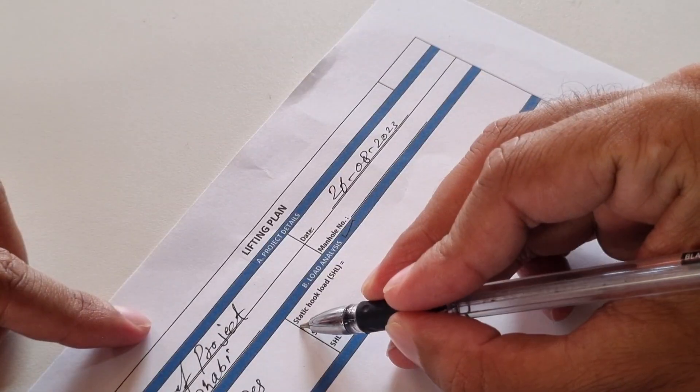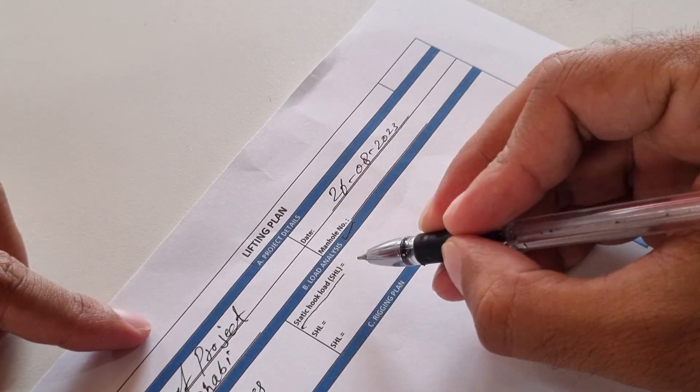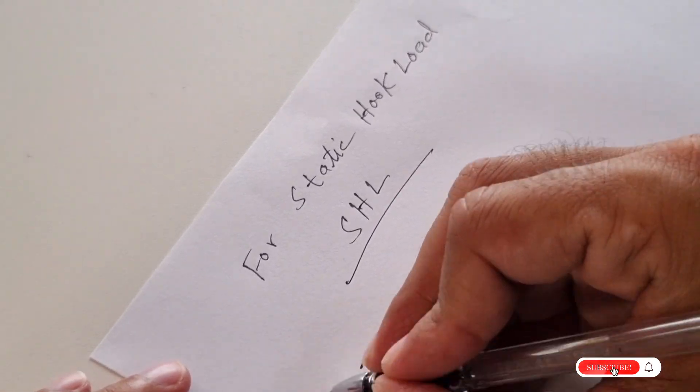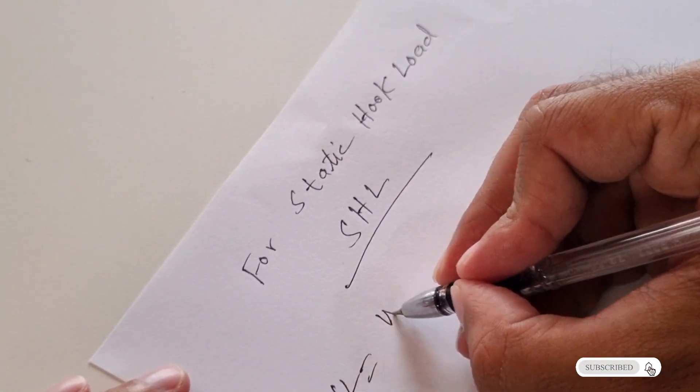This is SHL, static hook load. The formula is: SHL is equal to weight of the load.